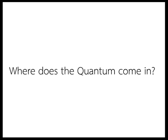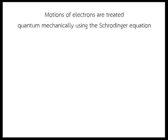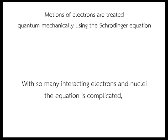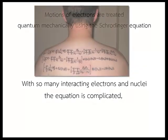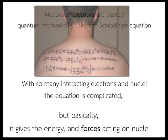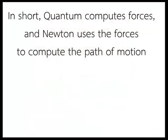Where does the quantum come in? Motions of electrons are treated quantum mechanically using the Schrödinger equation. With so many interacting electrons and nuclei, the equation is complicated. But basically, it gives the energy and forces acting on the nuclei.